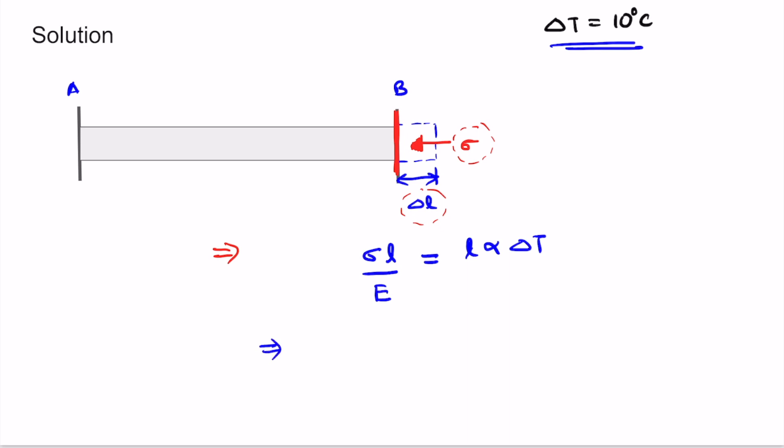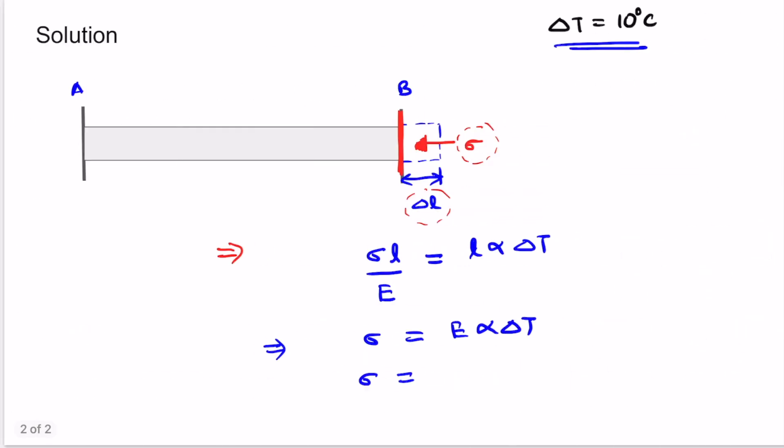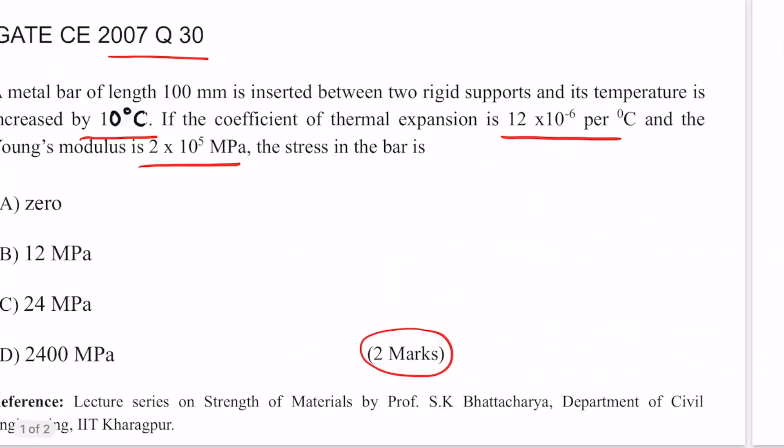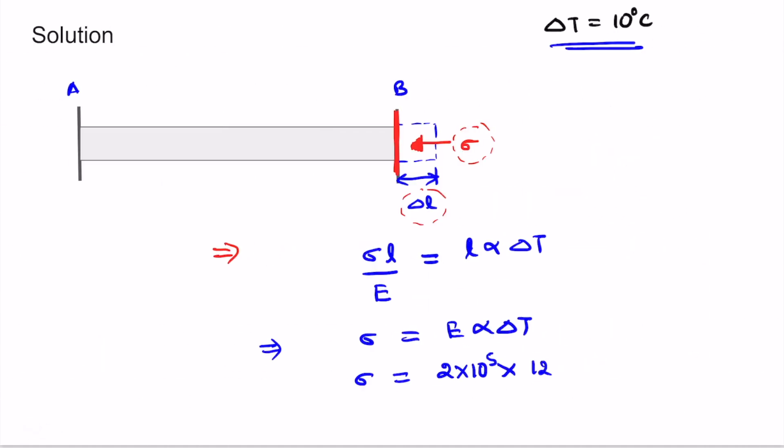We can put all the values here now. σ will be E α ΔT. σ will be E, which is 2 × 10^5 MPa, α is 12 × 10^-6 per degree Celsius, and the change in temperature is 10.